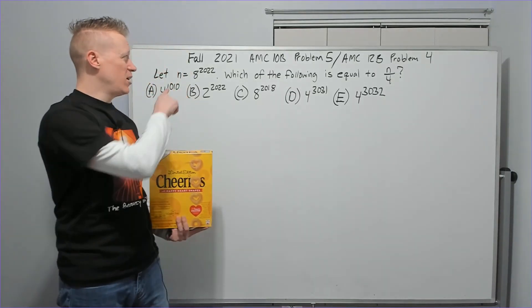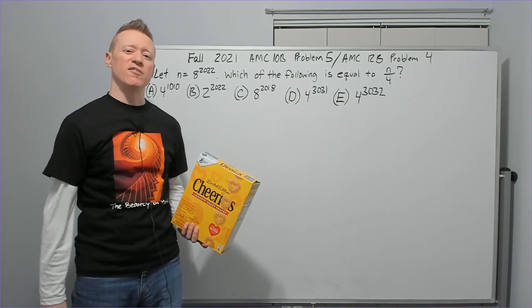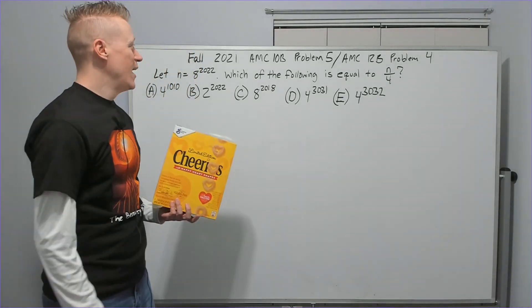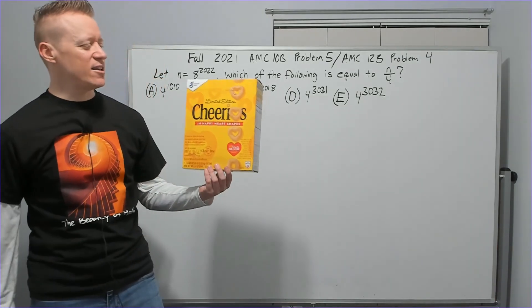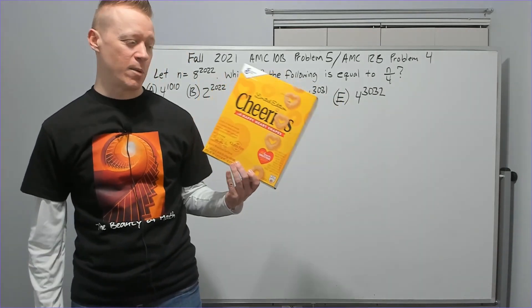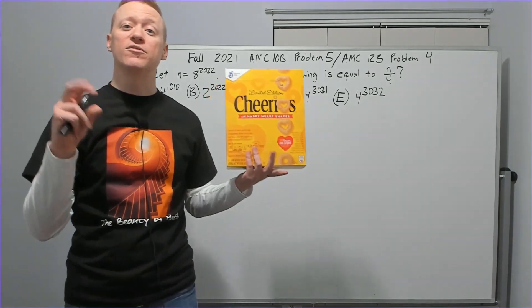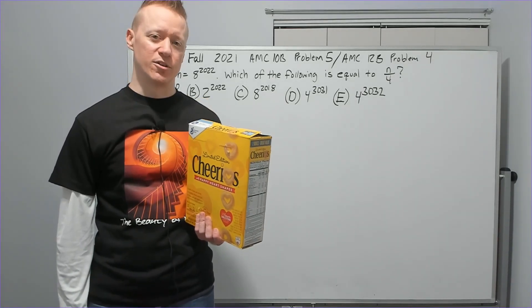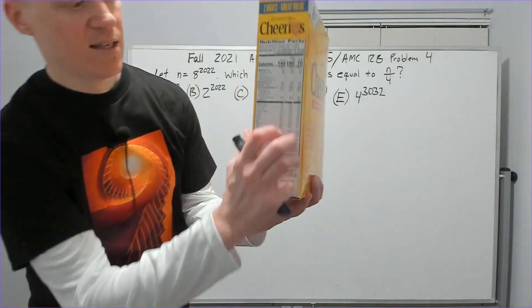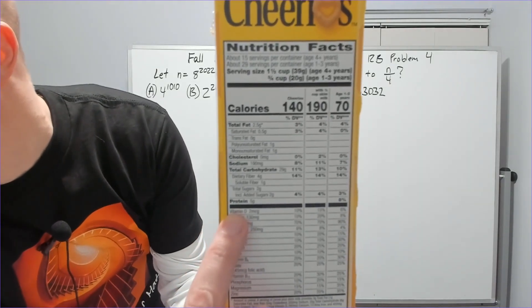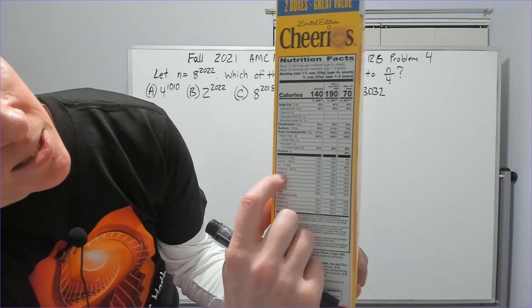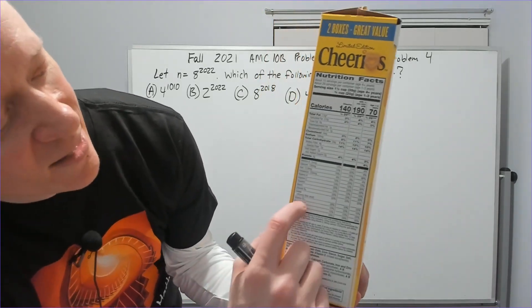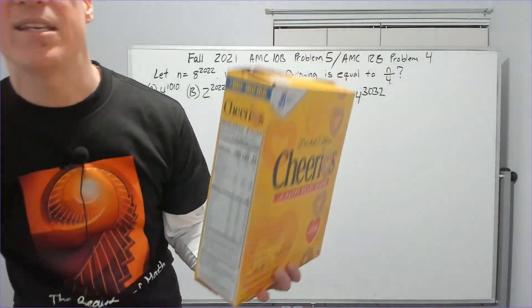We are doing the Fall 2021 AMC 10B problem five. This is not a promotion, this is a box of Cheerios. Let's say that you rolled out of bed one morning and you decided to have yourself a bowl of Cheerios. If you ask yourself what did you just eat, you would tell people Cheerios, but you would not be telling the full truth. You did not eat Cheerios. What you ate was vitamin D, calcium, iron, potassium, fiber, sodium, cholesterol, carbohydrates, trans fat, saturated fat, total fat, vitamin B6, niacin, thiamine - all these different things. That is what you ate.